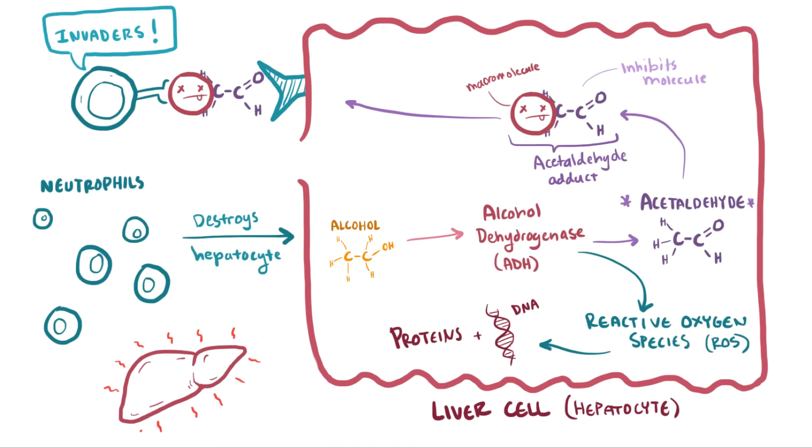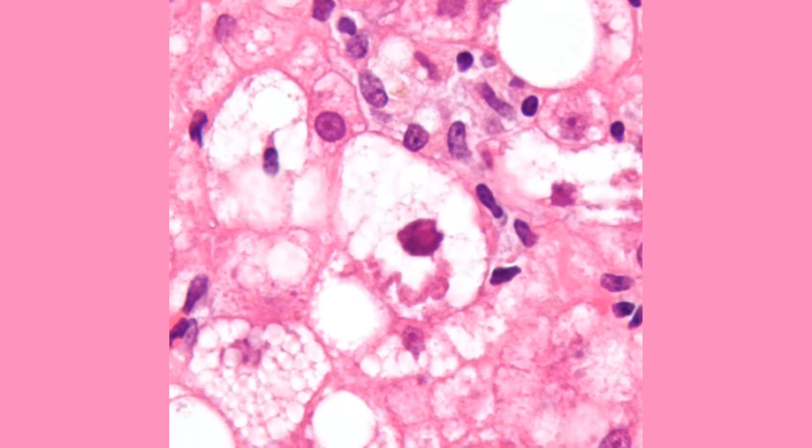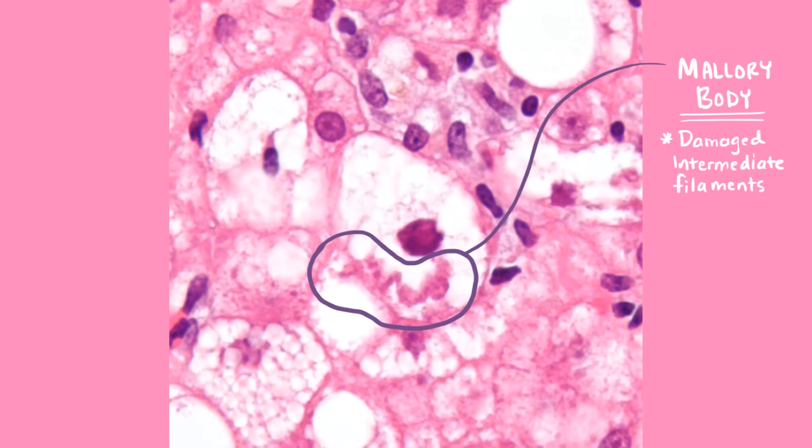As the cells become inflamed and damaged, patients have now developed alcoholic hepatitis, and we start to note a change on histology, and notice these bundles of proteins called Mallory bodies. Specifically, these are damaged intermediate filaments and are located in the cytoplasm of hepatocytes. The mechanism that produces these bodies is still unclear, but they're most commonly seen in alcoholic hepatitis.